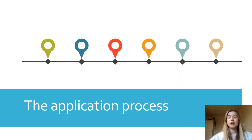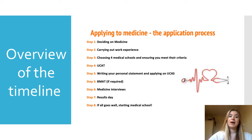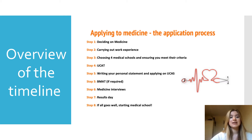There are multiple hurdles that you need to jump through when applying to medicine, so now we're going to talk through the timeline of the application process. Firstly you need to decide on medicine — why do you want to study medicine — and make sure it's not someone else who is coercing you into this decision, because it's a difficult course and you really need the motivation yourself. Once you've done that you need to look at the attributes of a good medical student and doctor and consider how these match up to your own personal attributes, and then start thinking about carrying out work experience and volunteering.